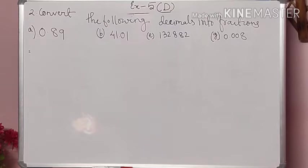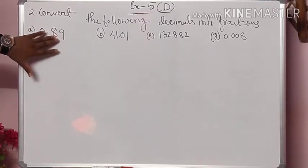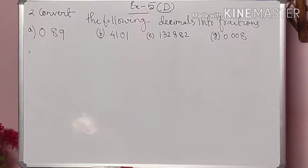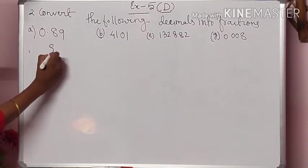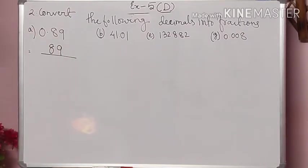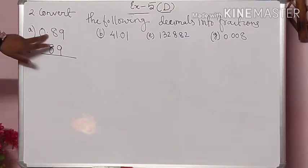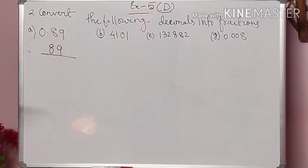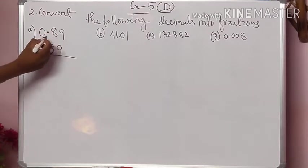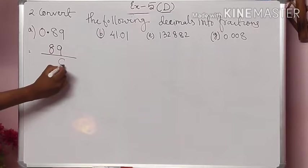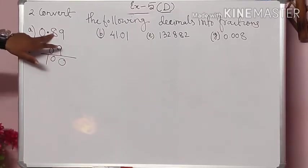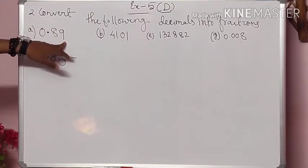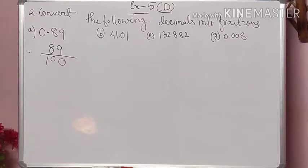Let's begin with number A. The decimal 0.89 is given and we have to convert it into a fraction. Write all the numbers directly — so we write 89 as the numerator. Give a dividing bar, and since these are decimal numbers, they will be divided by 10, 100, 1000, and so on. By what number will 89 be divided? Count the numbers after the decimal — there are two numbers. So there will be two zeros, making it divided by 100. So 0.89 equals 89 by 100.